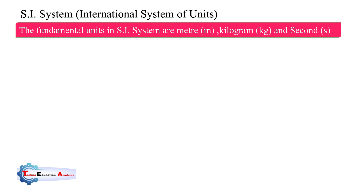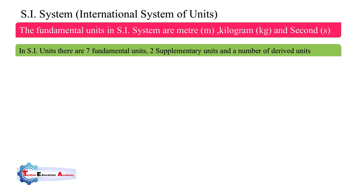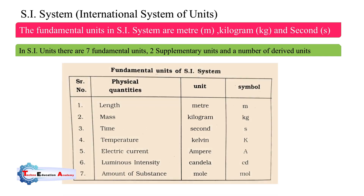The full form of SI system is International Standard System. The fundamental units in the SI system are meter, kilogram, and second, used at international level. This system is mostly used. In the SI unit there are seven fundamental units, two supplementary units, and a number of derived units. The seven fundamental units of the SI system are: length, mass, time, temperature, electric current, luminous intensity, and amount of substance.